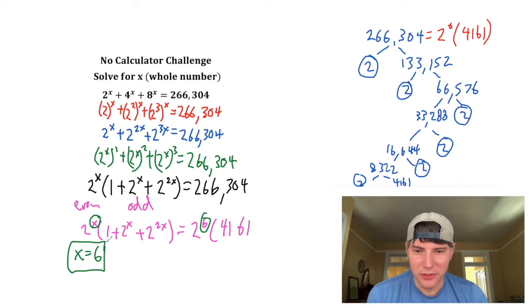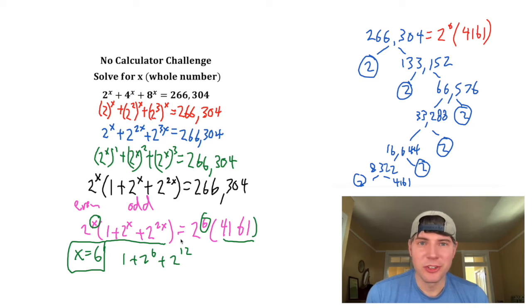Well, I guess we can check ourselves. If this equals 4,161, then we figure it out. So 1 plus 2 to the 6 plus 2 to the 12th. So basically, does that equal 4,161? If so, the answer is 6 because then these two sides would be equal to each other.